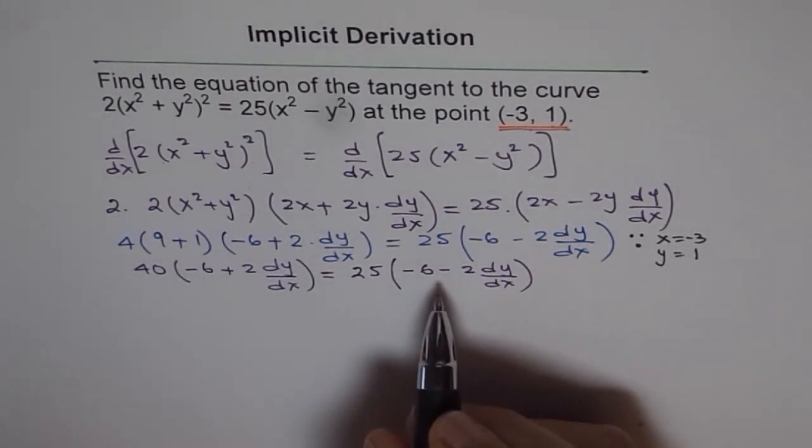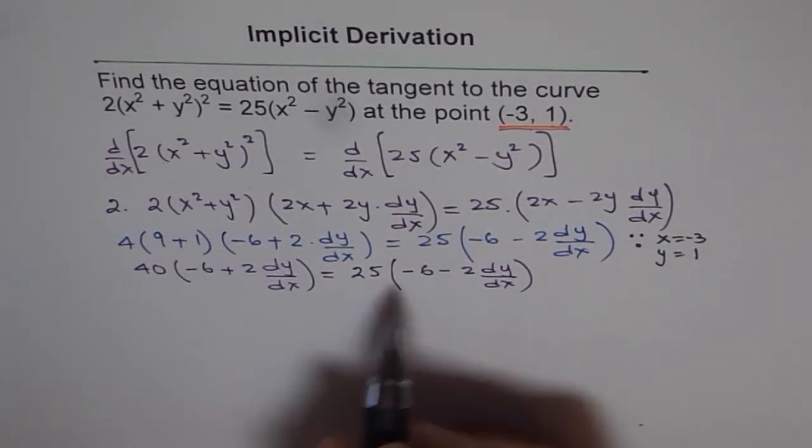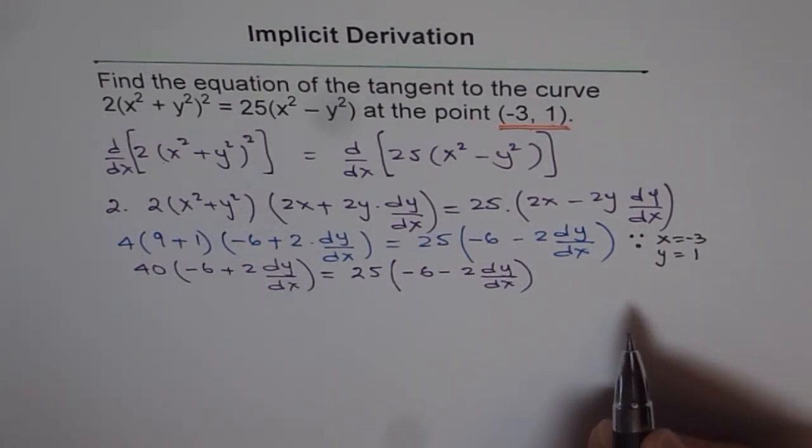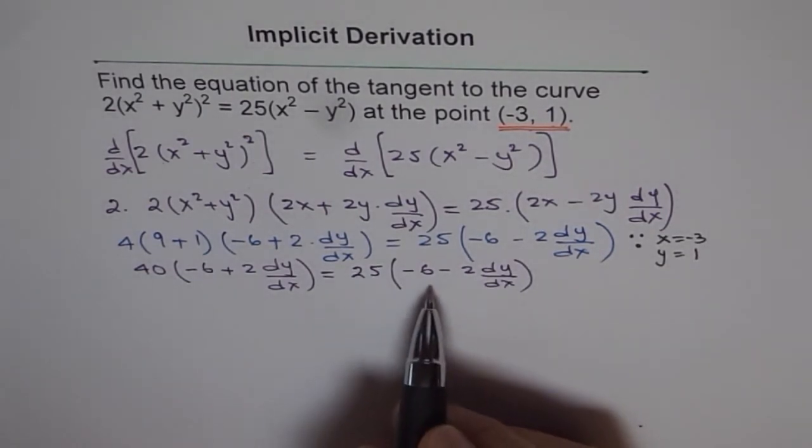We could have opened the bracket and brought the terms together and saved some more steps. Anyway, now what we will do is divide 40 by 25 and put them in fractions. Now let's bring the terms together.